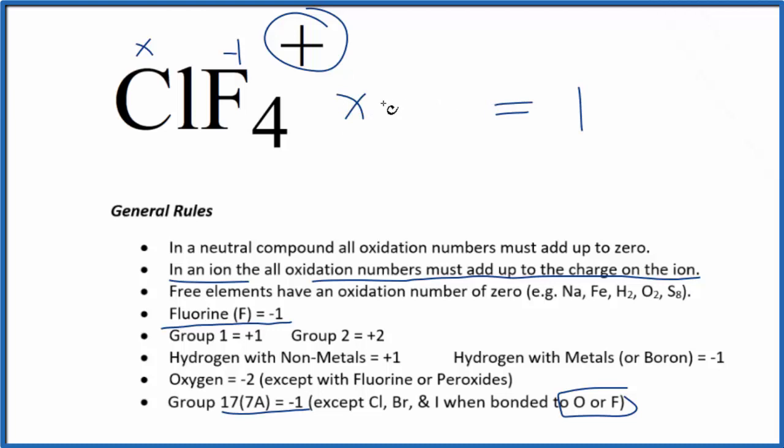x minus 1 times 4, that equals 1. So x - 4 = 1. We add 4 to both sides, x equals positive 5. So the oxidation number on the chlorine in ClF4+ is +5.